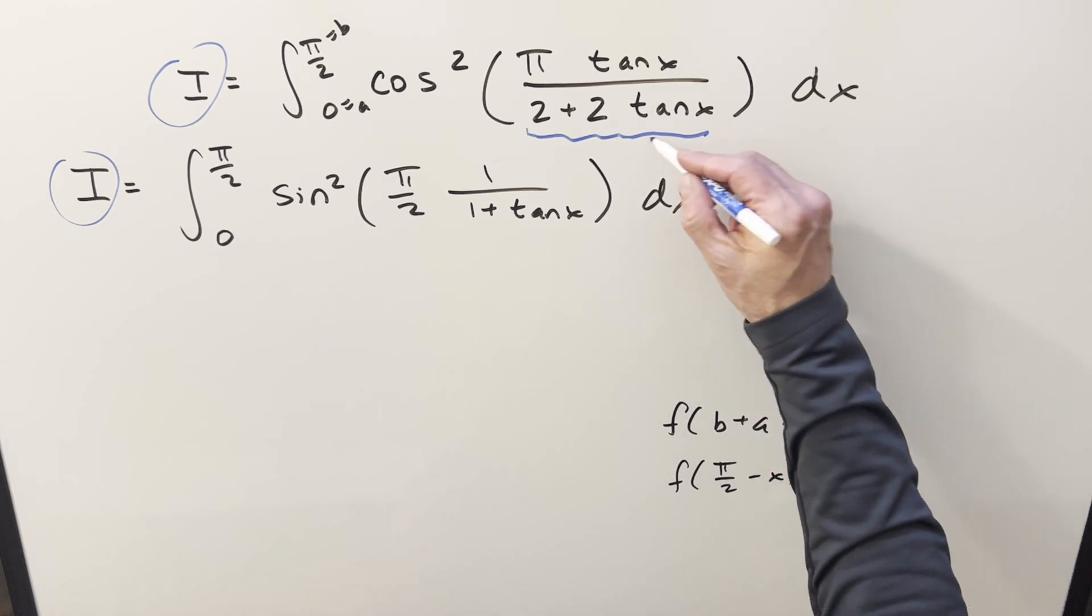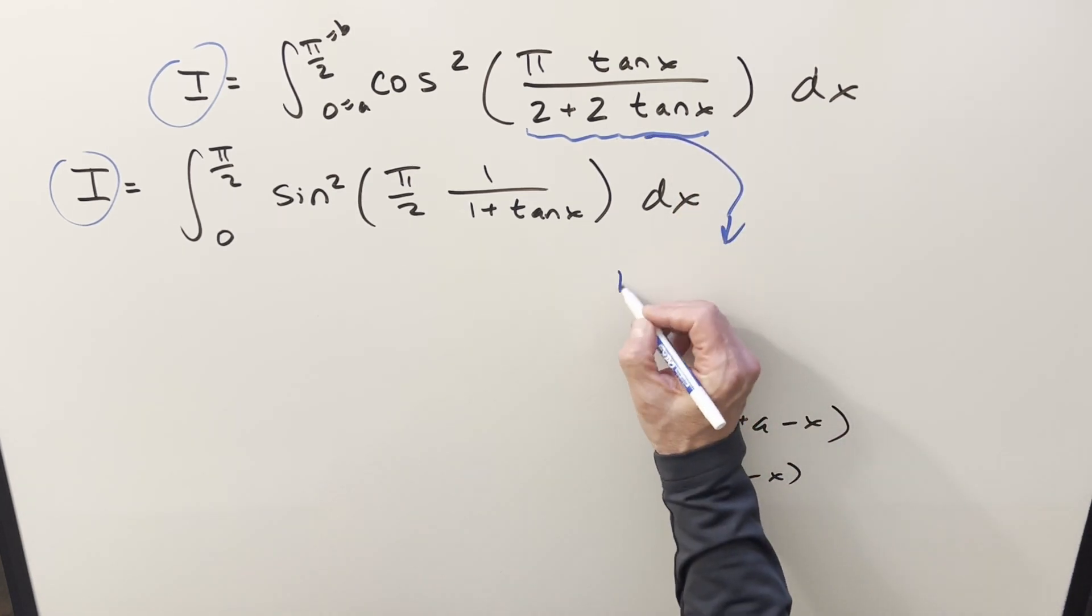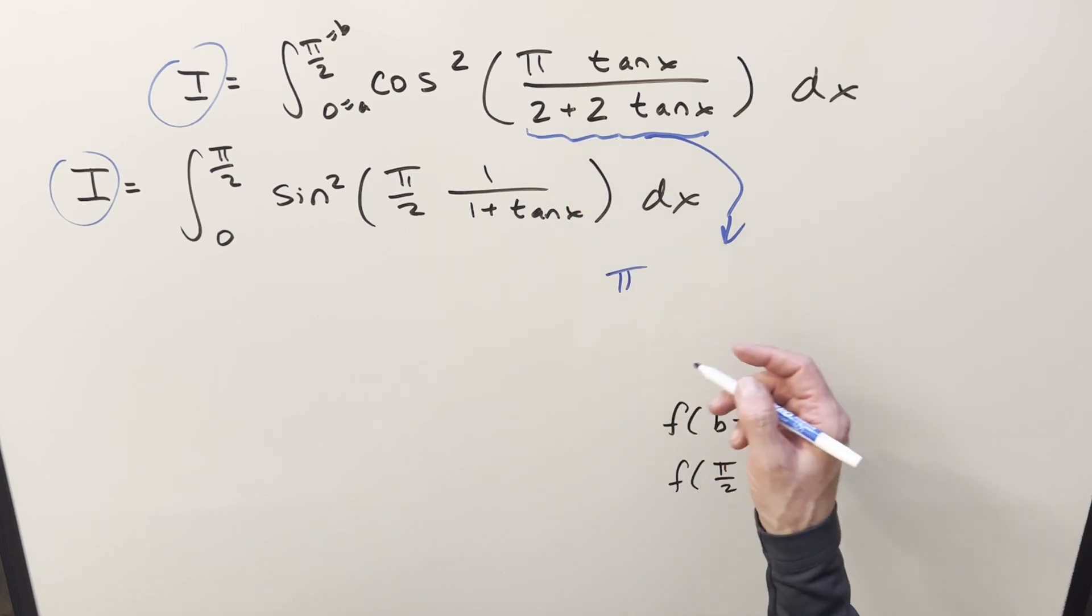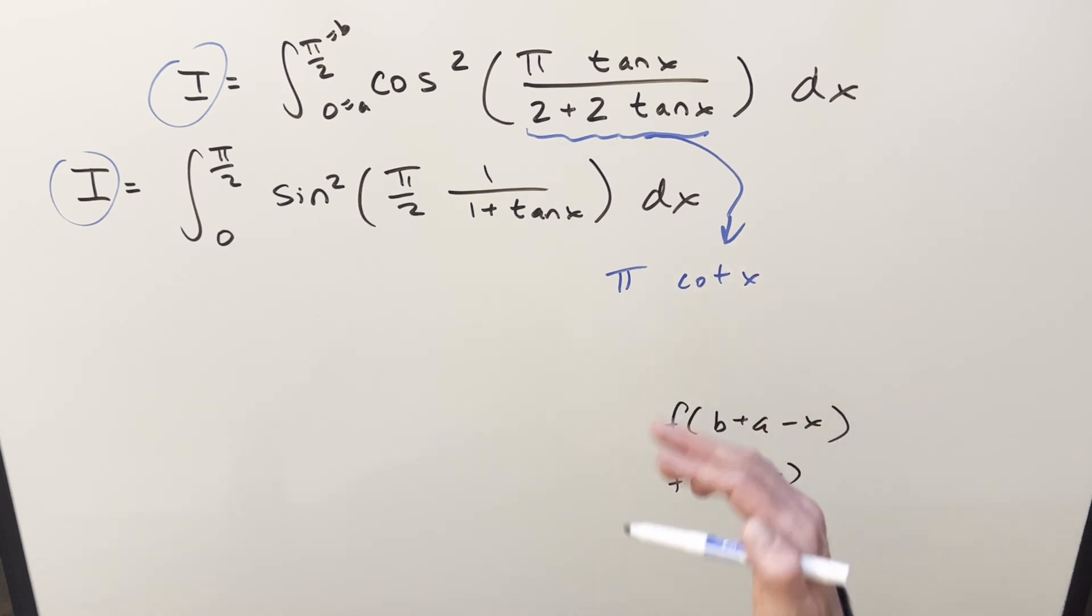So again, the complicated part is all this stuff that we were messing with before. Applying this, what's going to happen, we're going to have, just dealing with the input here, we're going to have π. Complementary angle formula and tangent is going to be just cotangent of x. If you did it out with sines and cosines, the sines turn to cosines, cosines turn to sines, and what you get is cotangent x.